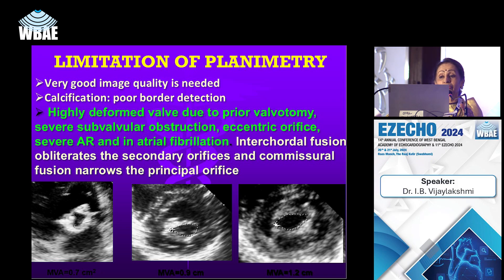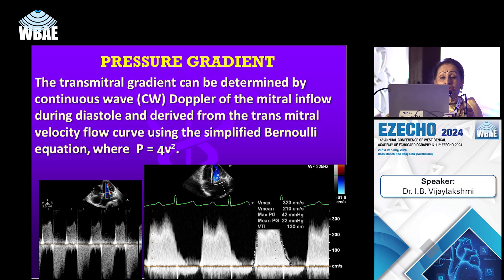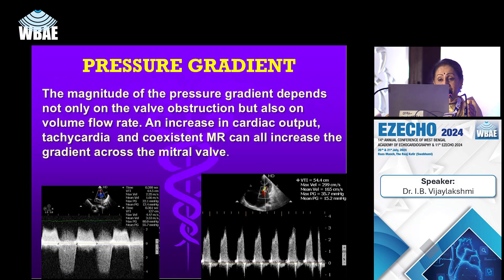Factors that hamper planimetry assessment include a highly deformed valve due to prior valvotomy, severe subvalvular obstruction, eccentric orifice, severe AR, and atrial fibrillation. Commissural fusion should be looked for carefully when sending the patient for balloon dilatation, and those details must be included in the echo report.